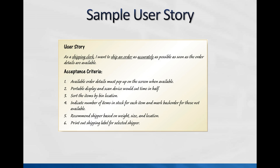For example: as a shipping clerk, I want to ship an order as accurately as possible as soon as the order details are available. One sentence says what I want to accomplish. From there, a couple of things to consider: available order details must pop up on the screen when they're available; a portable display and scanning device — like what UPS uses; and sort items by bin location.